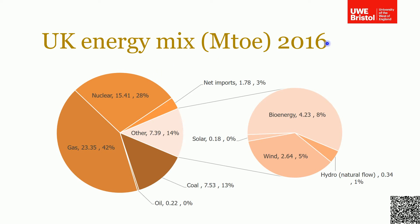This is from 2016 — data always lags a little behind the actual year as it takes time to collate. It shows the amount of energy expressed in megatons of oil equivalent, which is the amount of energy one ton of oil would release if perfectly combusted. It's used to non-dimensionalize these types of plots.